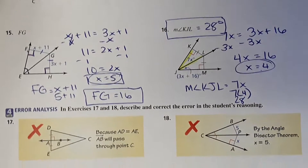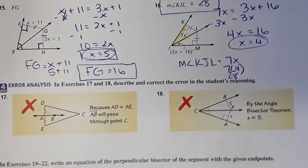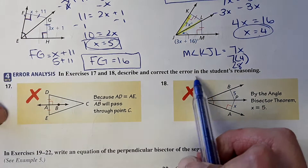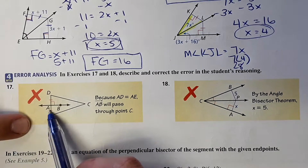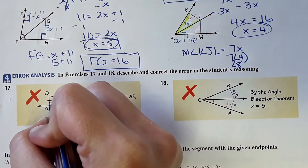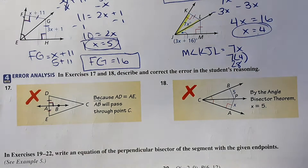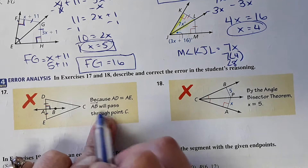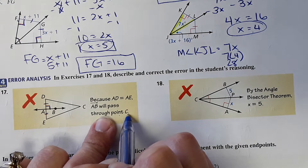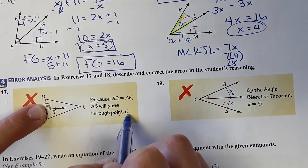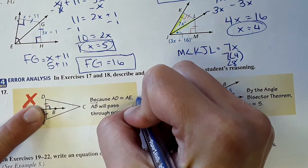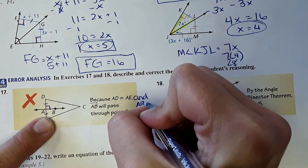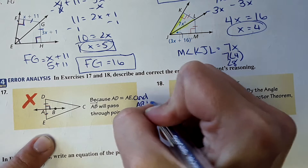Last couple here — an error analysis. Describe and correct the error in the student's reasoning. Here they show this is equal to this and this is perpendicular — it looks like a perpendicular bisector. It says because AD is equal to AE, AB will pass through point C. Well, they left out that it has to be at a 90-degree angle. So you would have to add that AB is perpendicular to DE, then it'll pass through C.